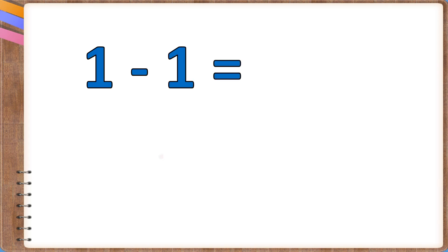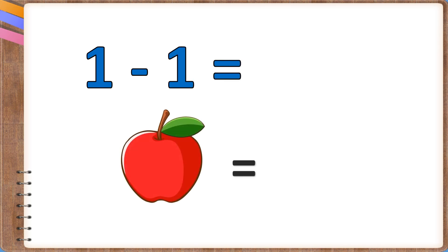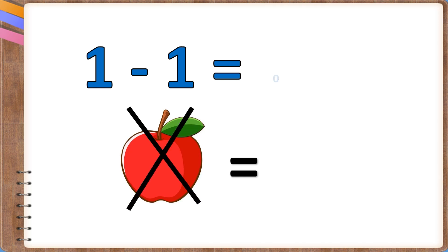Let's see what is 1 minus 1 equal to. I had one apple and I ate that one. Now I have no apple, so I have zero apples.